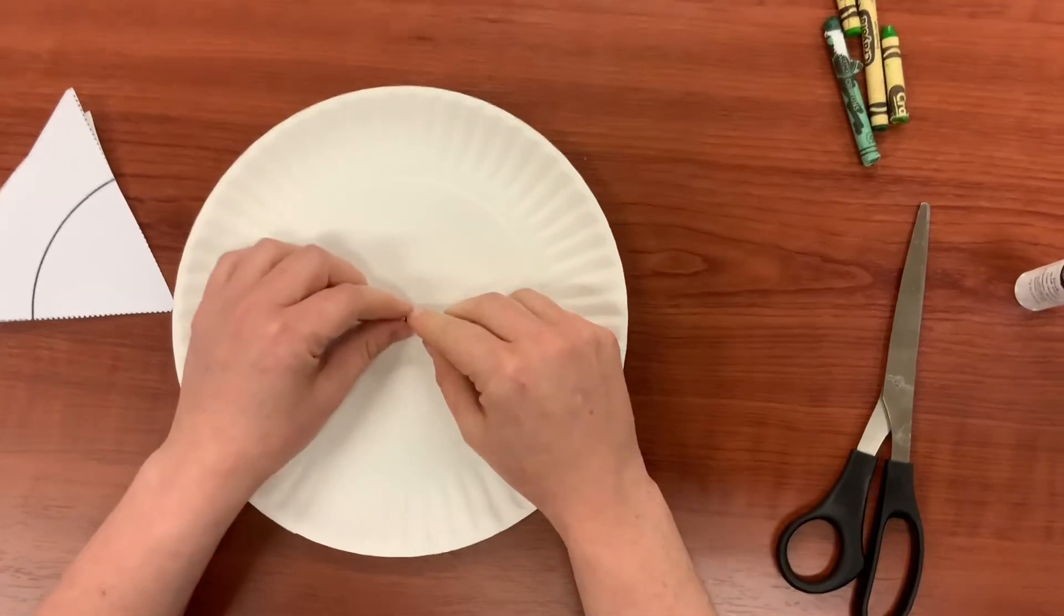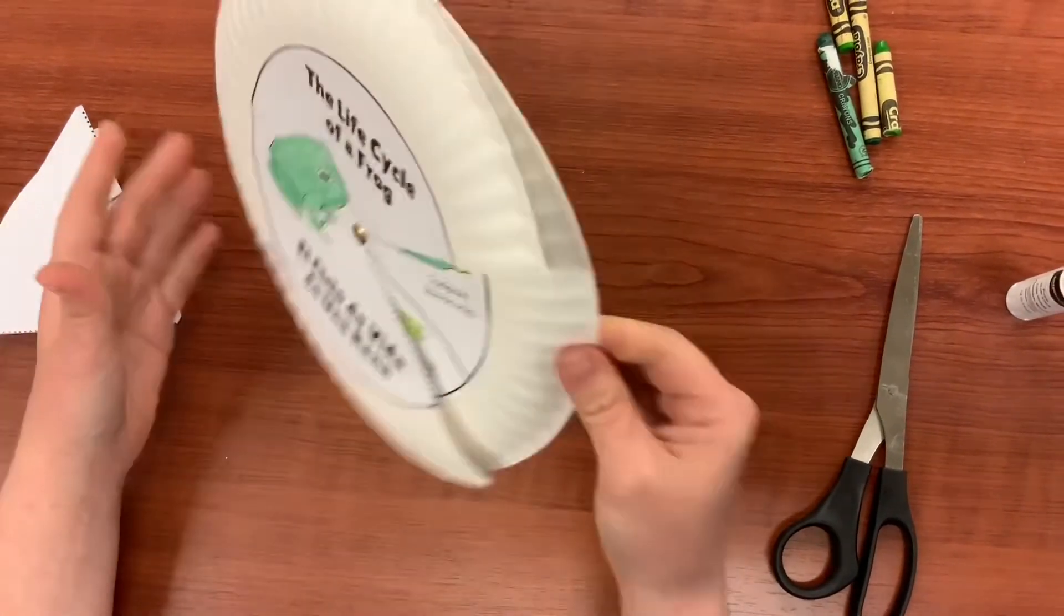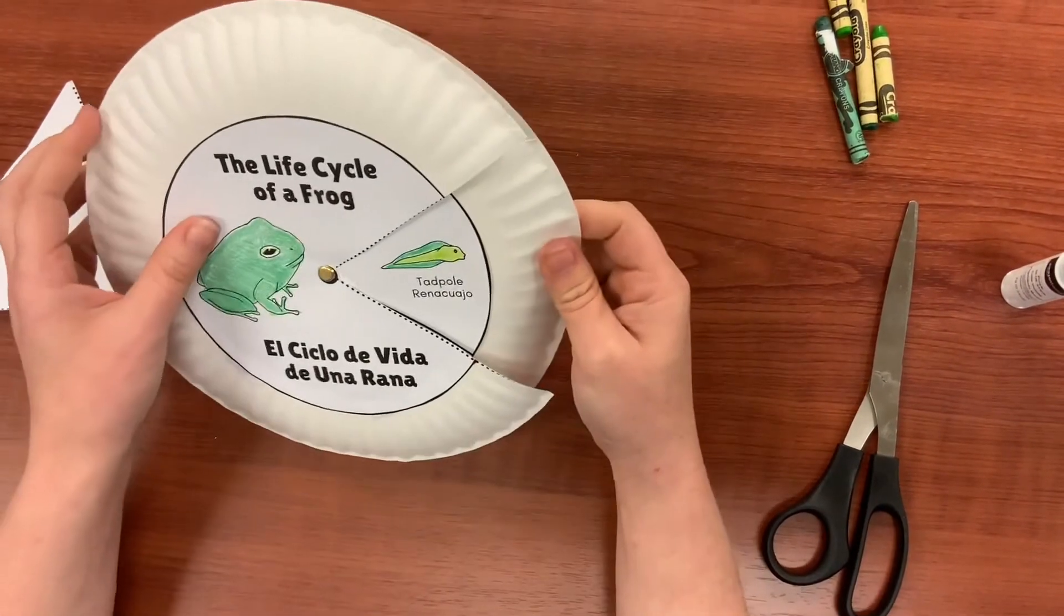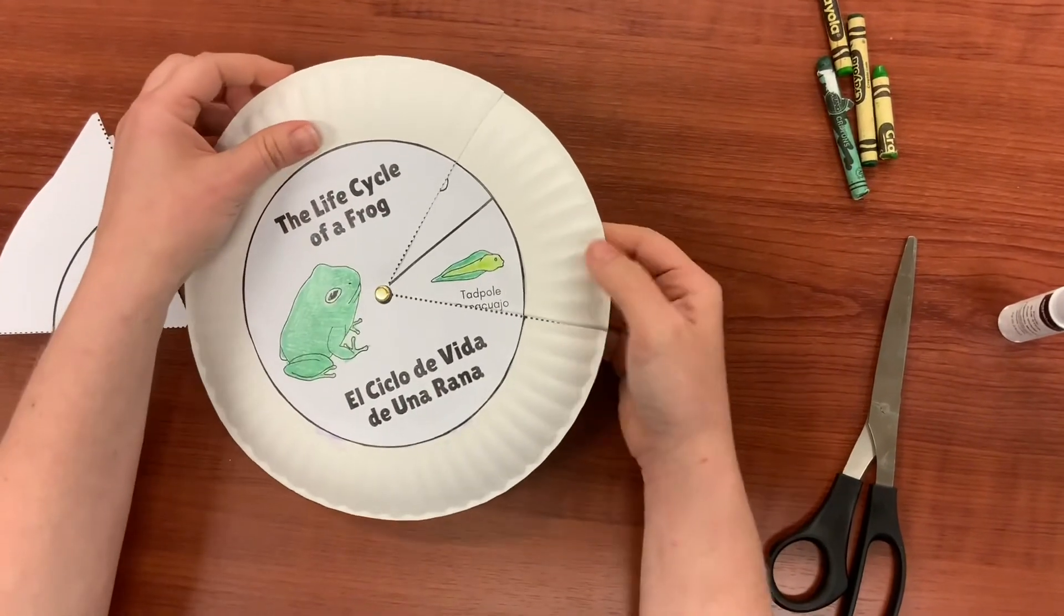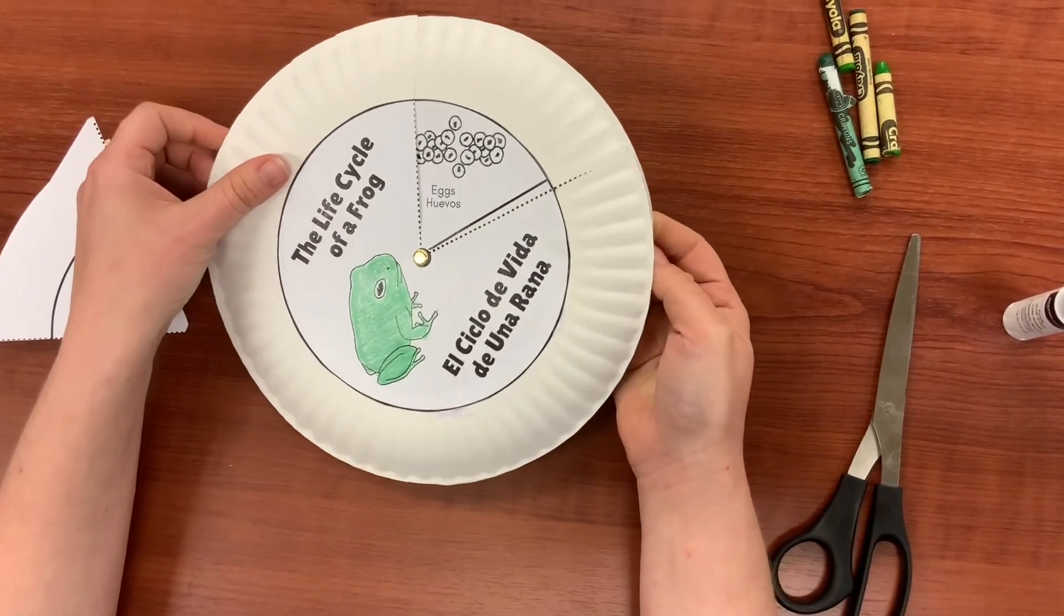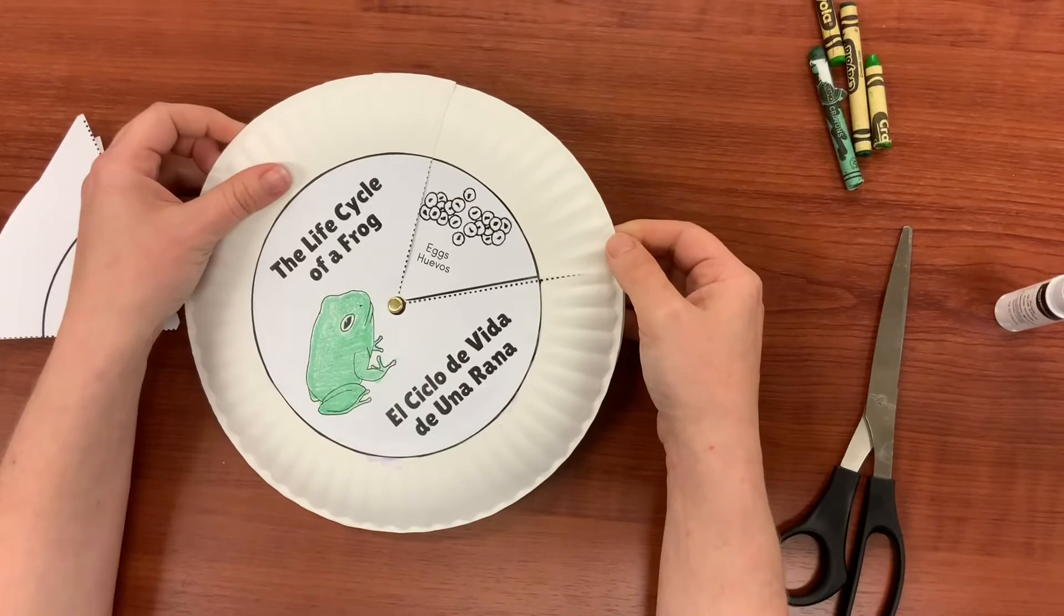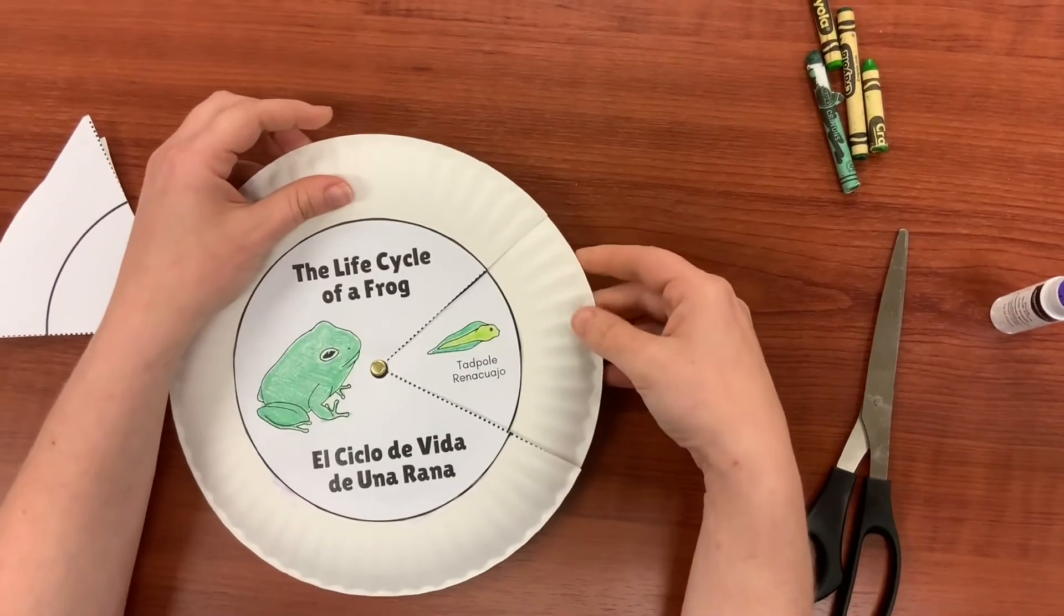Flip the plate over and open the brad to secure. Just like that. And now you can start spinning your plates to visit each and every stage of a frog's life cycle.